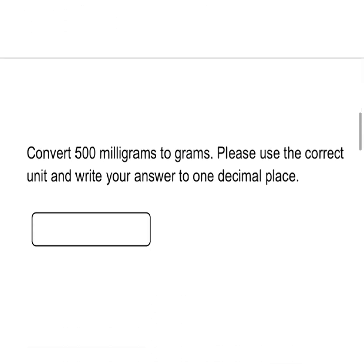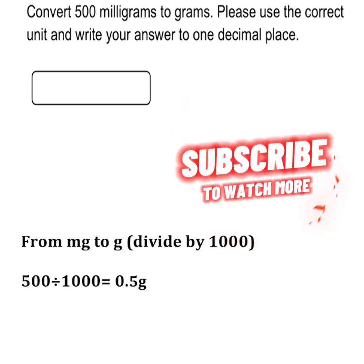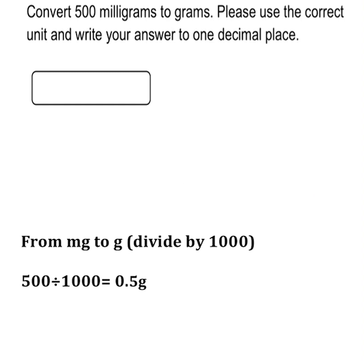The sixth question says: convert 500 milligrams to grams — please use the correct unit and write your answer to one decimal place. We are converting from smallest to biggest, so we divide: 500 ÷ 1000 = 0.5. We need to add the unit here because it was not provided in the question, so the answer is 0.5 g. If converting from biggest to smallest you would multiply, but here we divide.